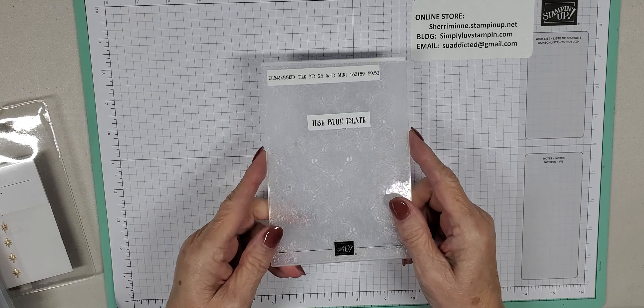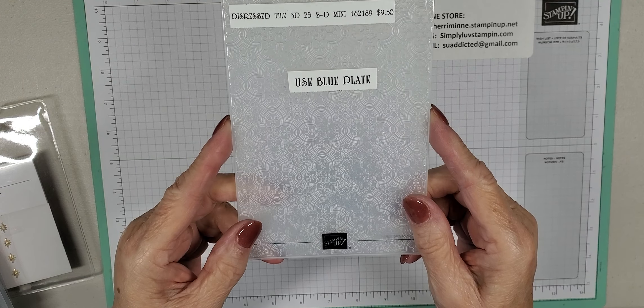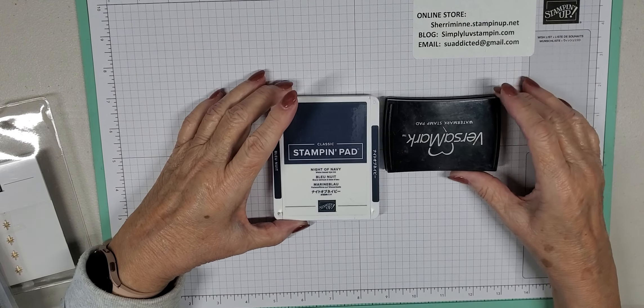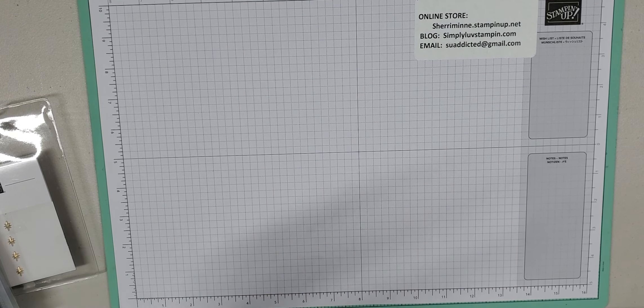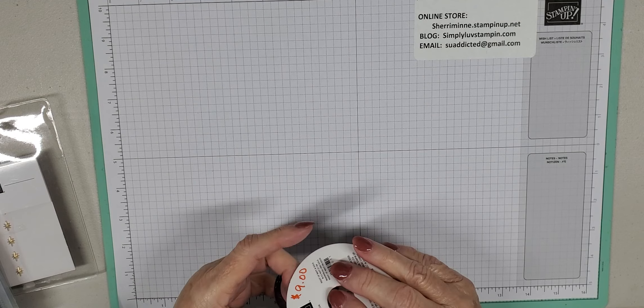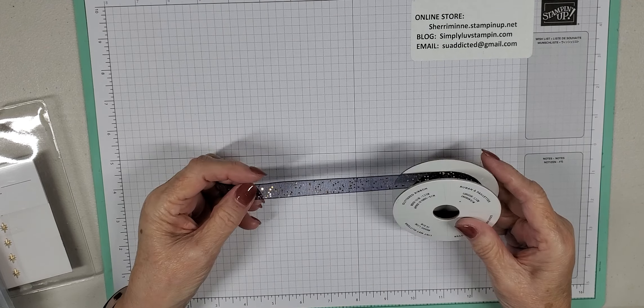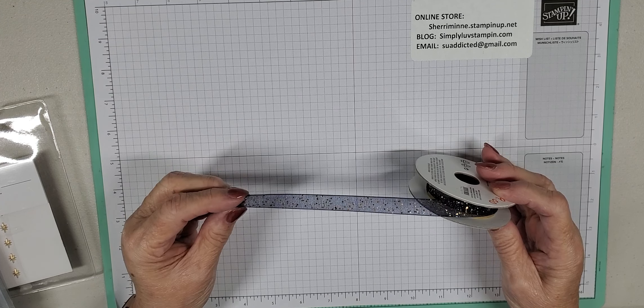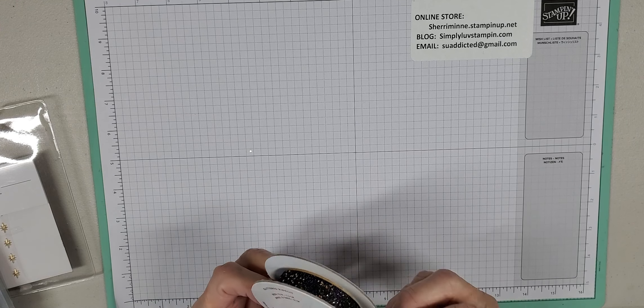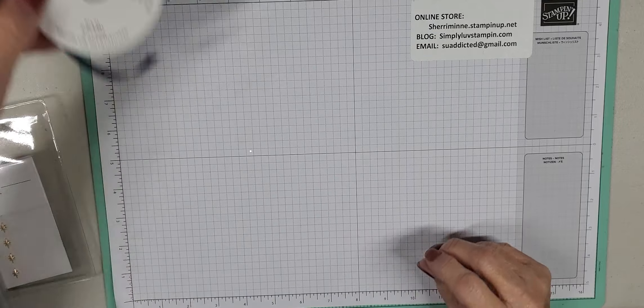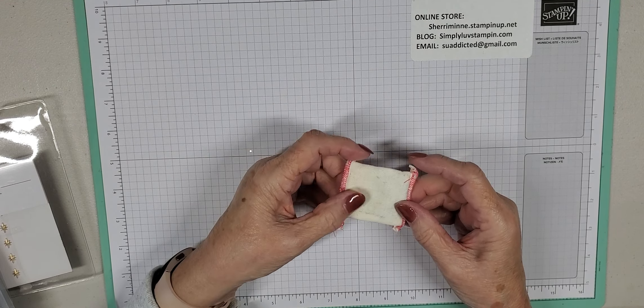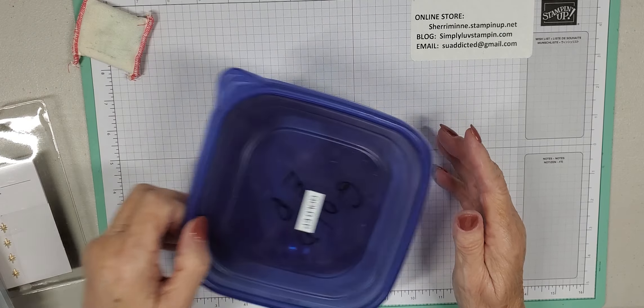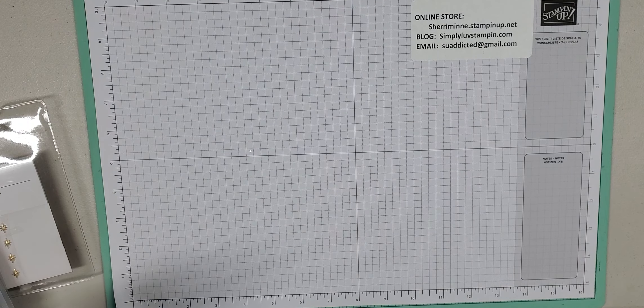We'll be using the Distressed Tile 3D folder - it's a gorgeous folder also in the new mini catalog. For inks we're using Versamark and Night of Navy. We'll also be using this gorgeous glittered ribbon, Night of Navy with little gold dots on it - so pretty. And we'll use our little embossing buddy to keep the static down on the piece we're embossing, and gold embossing powder.